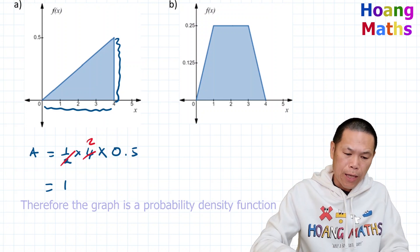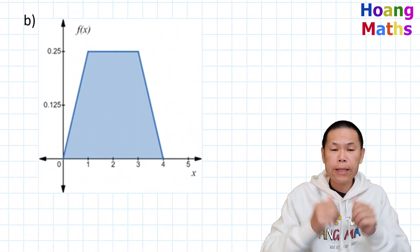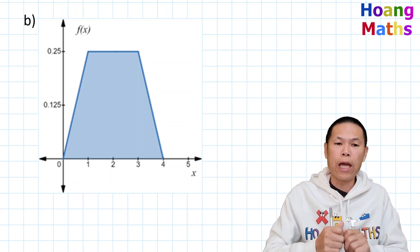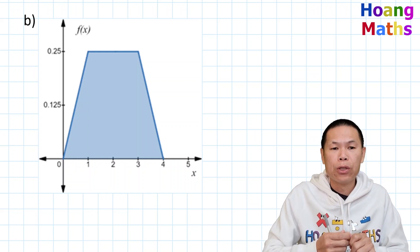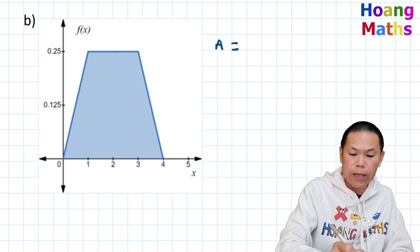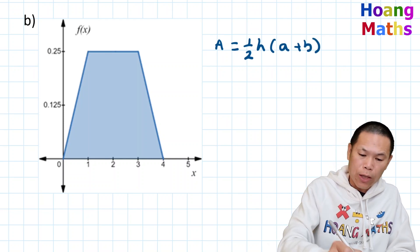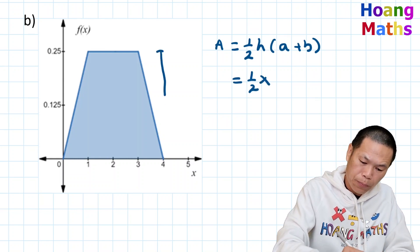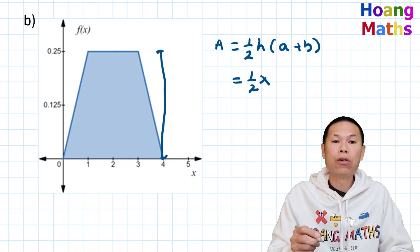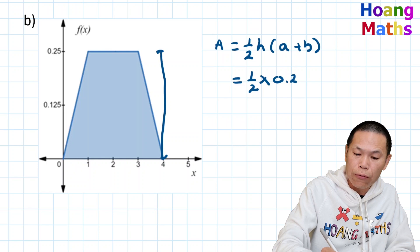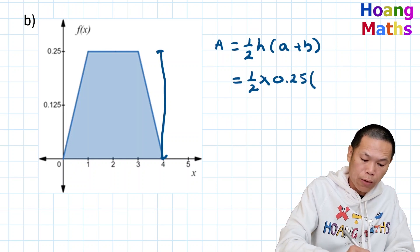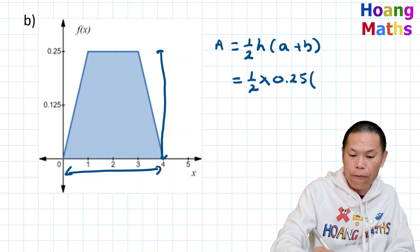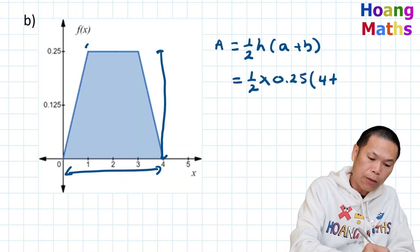Part B. To work out whether it is a probability density function, we work out the area under the curve — it is a trapezium. So we use the trapezium rule. The area of a trapezium is a half of height times bracket A plus B. The perpendicular height is 0.25, and A is four units.